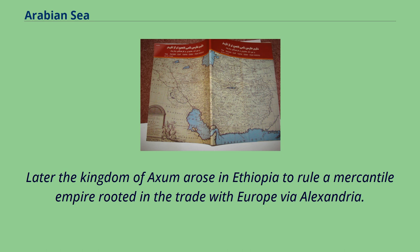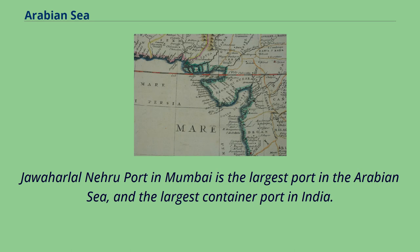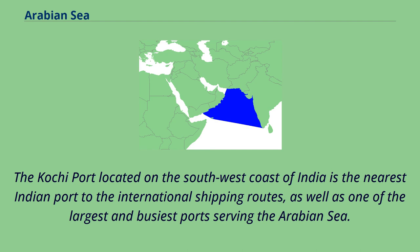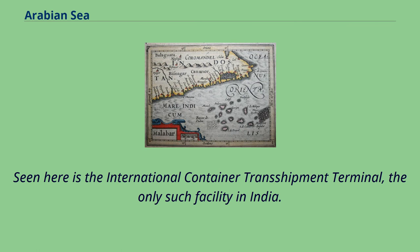Later, the Kingdom of Aksum arose in Ethiopia to rule a mercantile empire rooted in trade with Europe via Alexandria. Jawaharlal Nehru Port in Mumbai is the largest port in the Arabian Sea and the largest container port in India. Major Indian ports in the Arabian Sea are Mundra Port, Kandla Port, Nhava Sheva, Kochi Port, Mumbai Port, and Mormugao. The Kochi Port, located on the southwest coast of India, is the nearest Indian port to international shipping routes and one of the largest and busiest ports serving the Arabian Sea. It features an international container transhipment terminal, the only such facility in India.